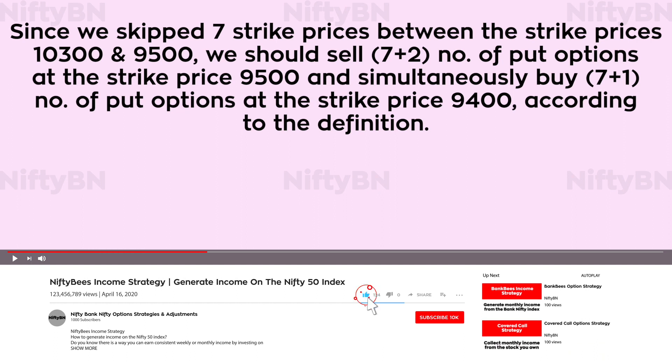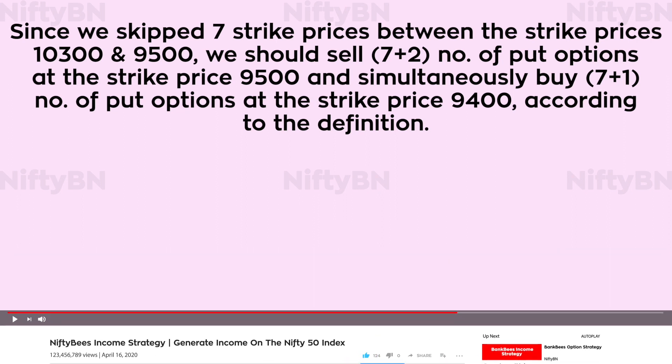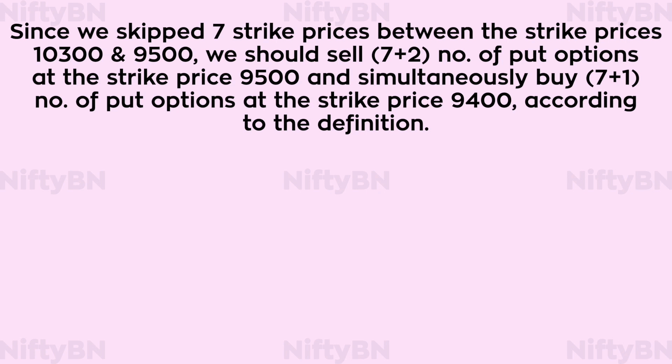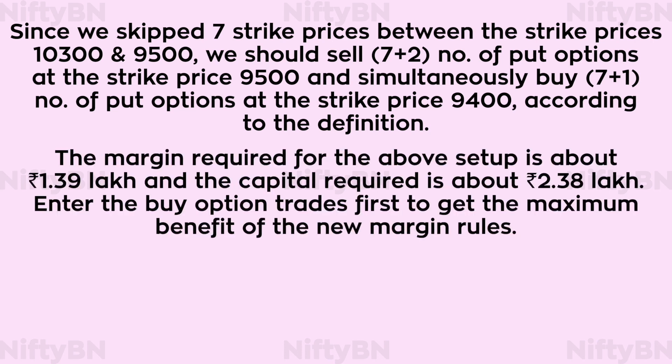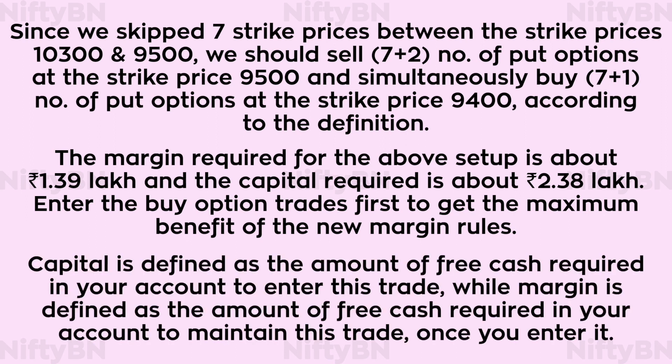Since we skipped 7 strike prices between the strike prices 10,300 and 9,500, we should sell 9 put options at the strike price 9,500 and simultaneously buy 8 put options at the strike price 9,400 according to the definition. The margin required for the above setup is about Rs 1.39 lakh and the capital required is about Rs 2.38 lakh. Enter the buy option trades first to get the maximum benefit of the new margin rules. Capital is defined as the amount of free cash required in your account to enter this trade, while margin is defined as the amount of free cash required to maintain this trade once you enter it.